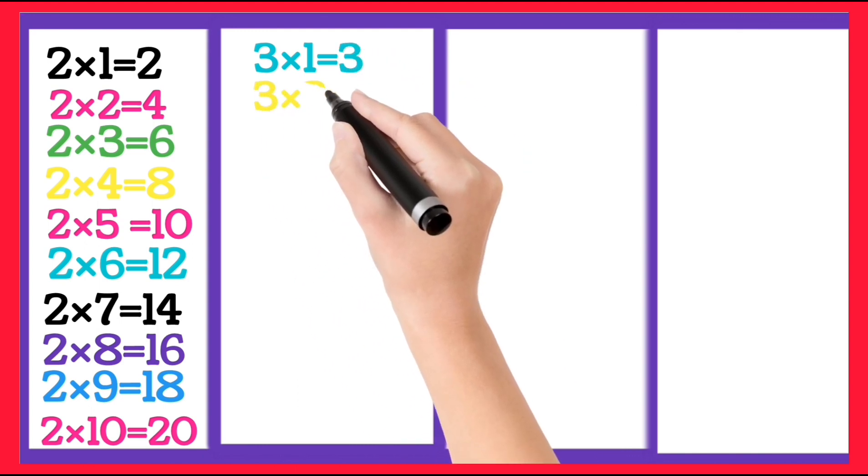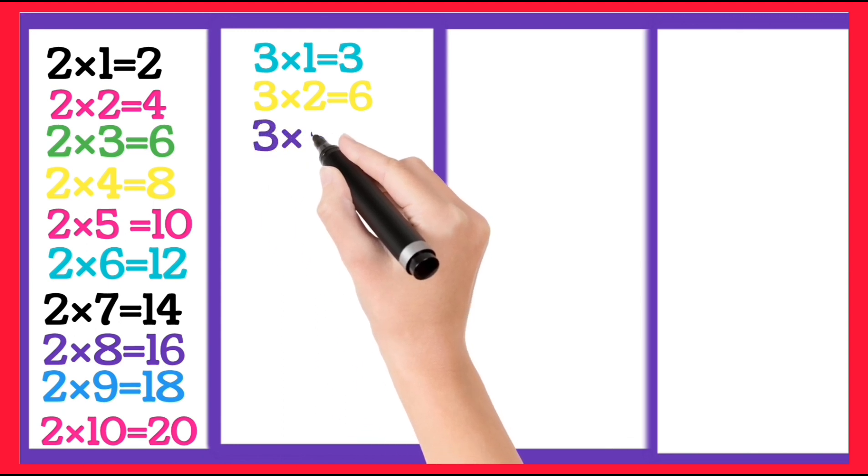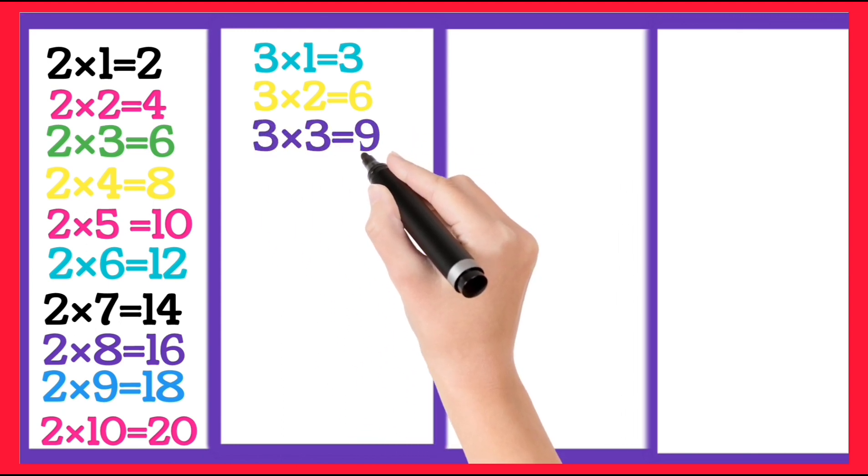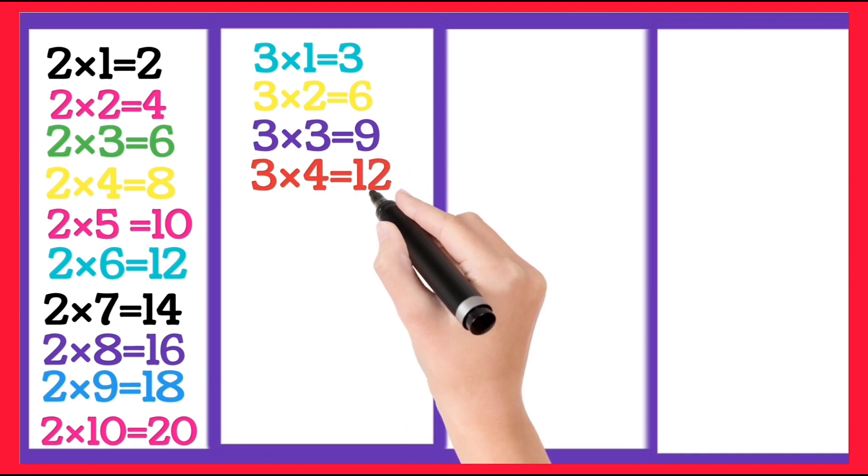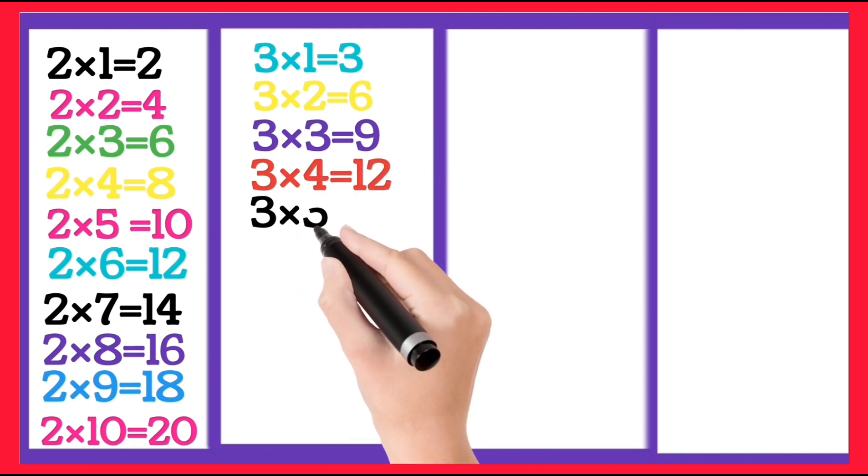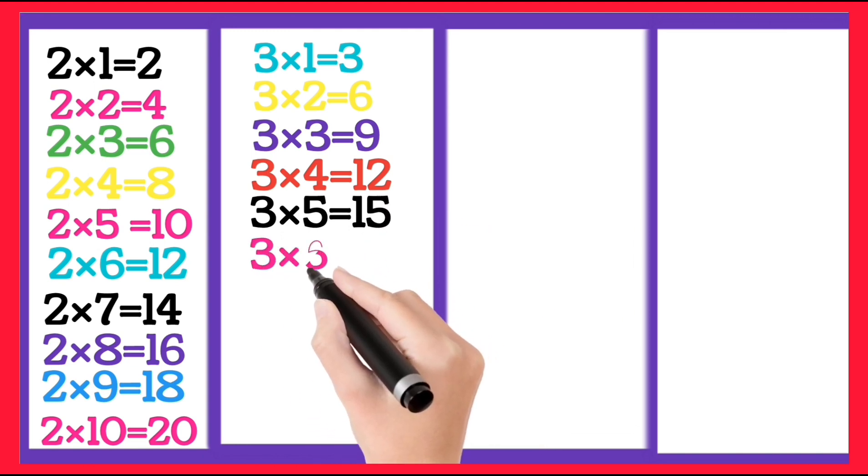3 1's are 3, 3 2's are 6, 3 3's are 9, 3 4's are 12, 3 5's are 15.